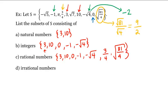Alright, finally the irrational numbers are any number in S that are not in this set here. Namely, negative square root 5, pi, and square root 7. So our irrationals are negative square root 5, pi, and square root 7. And this is how we classify real numbers into these subsets. Thank you, and we'll see you next time.